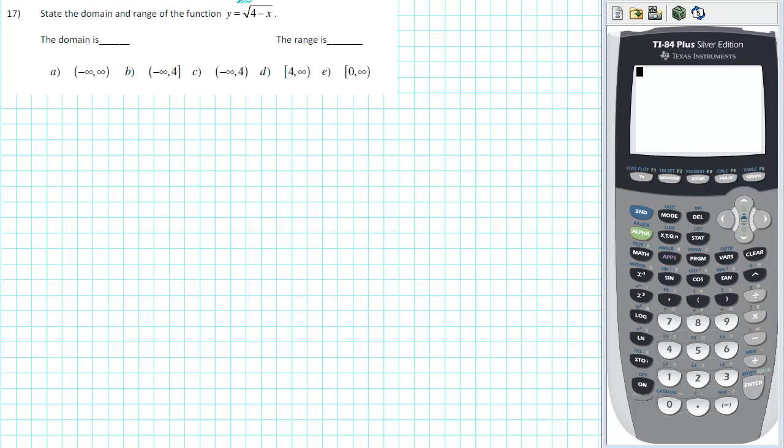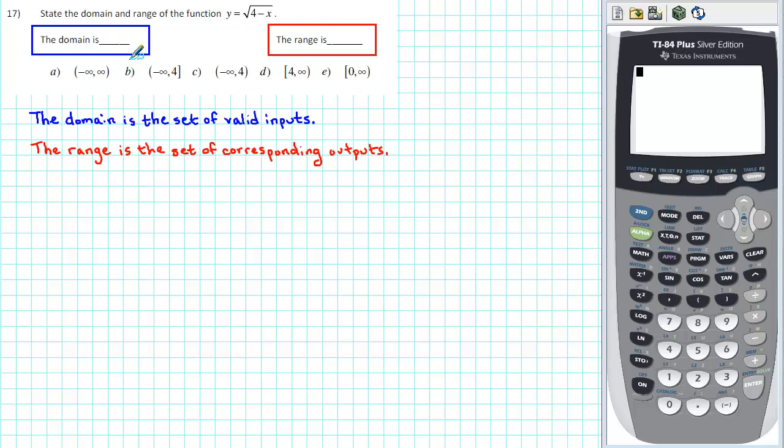State the domain and range of the function y equals the square root of 4 minus x. But first of all, let's recall the meaning of domain and range. The domain is the set of valid inputs, and the range is the set of corresponding outputs.